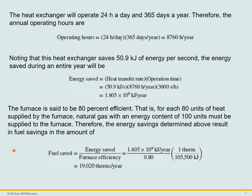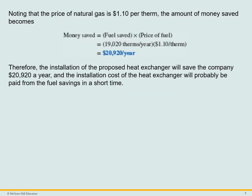Therefore, the fuel savings can be calculated as the energy saved divided by the furnace efficiency, which comes out to 19,020 therms per year. Noting that the price of natural gas is $1.10 per therm, the amount of money saved becomes $20,920 per year. Therefore, the installation of the proposed heat exchanger will save the company $20,920 a year.